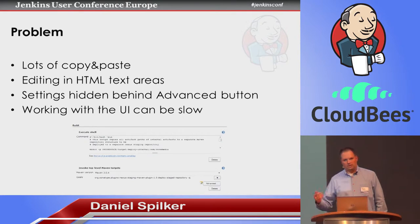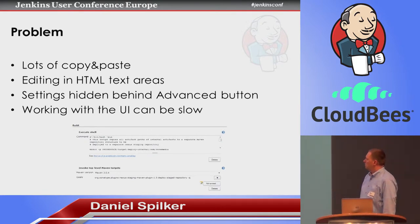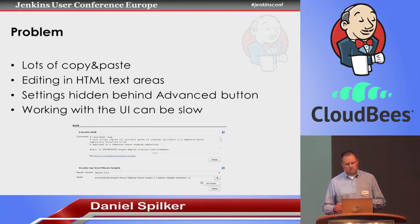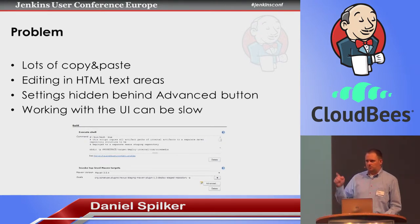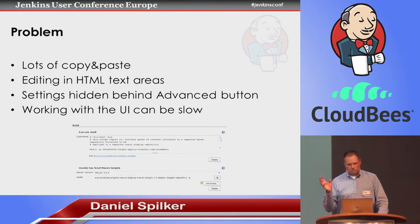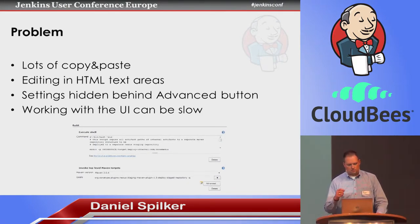So how do we get to that setup? Well, often we're cloning the jobs, then we're starting to edit them, entering scripts in small HTML text areas. We have to click through all the settings on several screens. Often settings are hidden behind the advanced button, so we have to do a lot of clicking, and the workflow in the UI can be slow when you want to create a complete new pipeline.